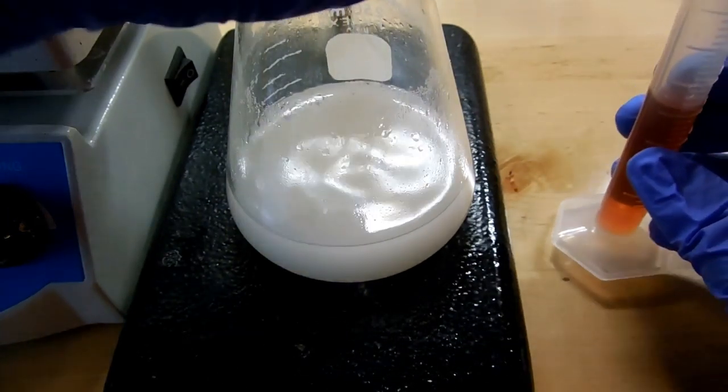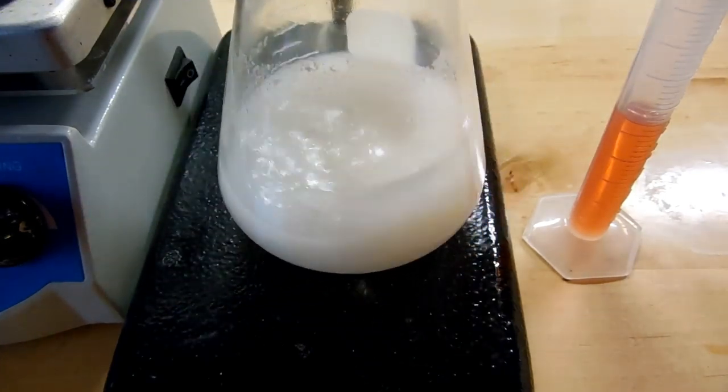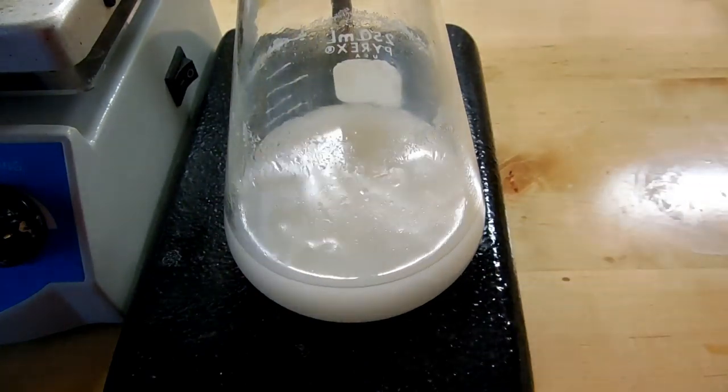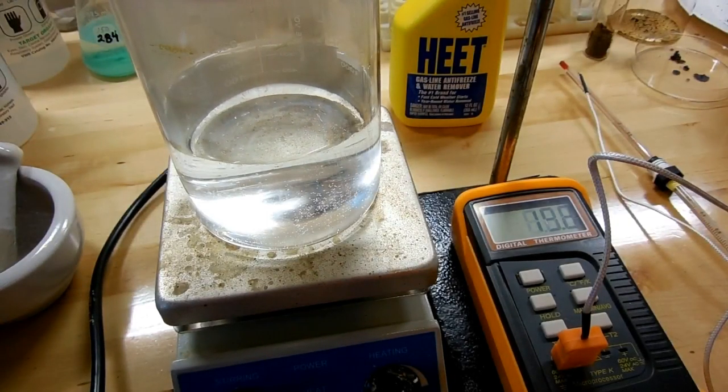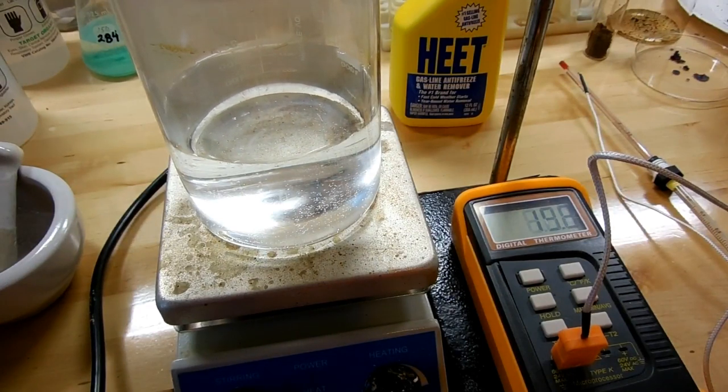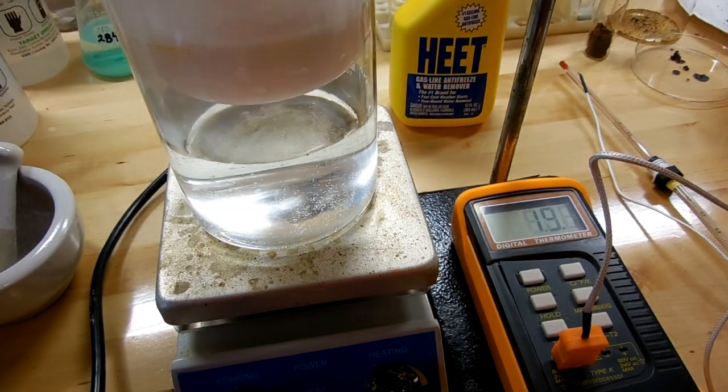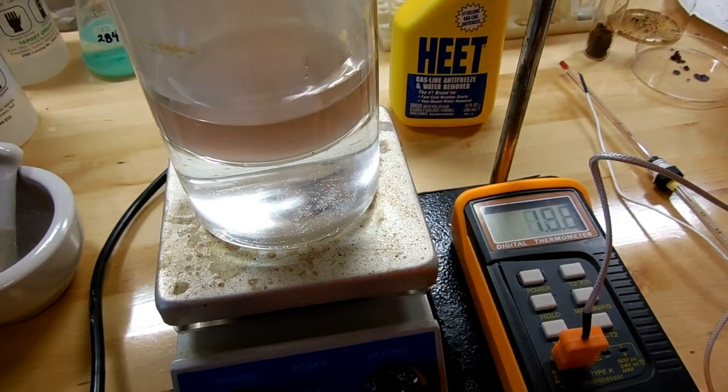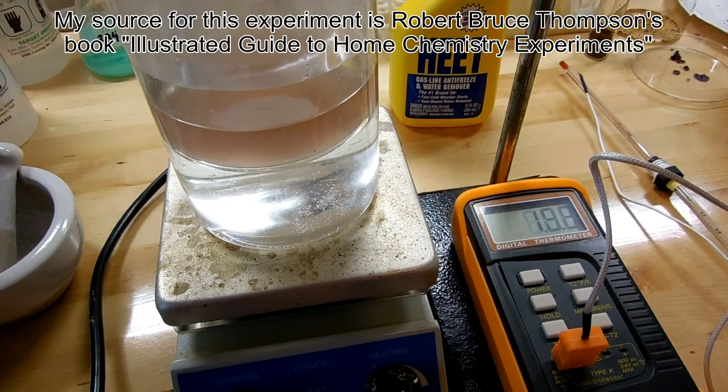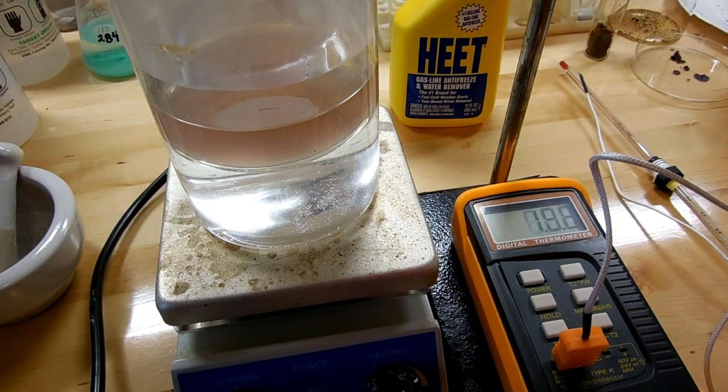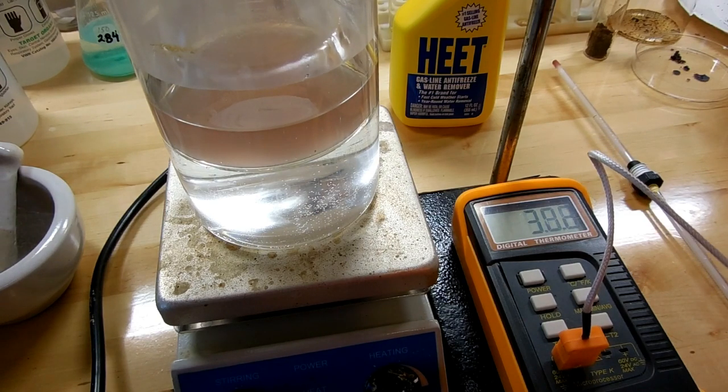We've got everything mixed together and now we want to heat everything for a certain period of time. The procedure calls for an hour and I've done that but you don't get very good yields. So I'm going to try for three or maybe four hours. We want to heat this in a hot water bath up to 60 celsius and I'm measuring that with a thermocouple probe.